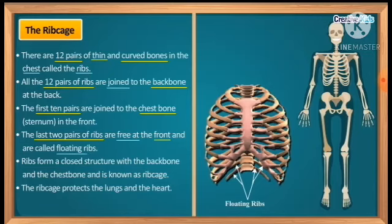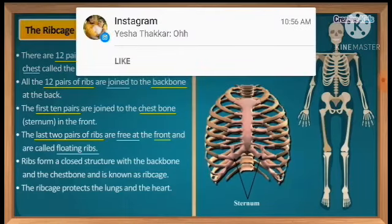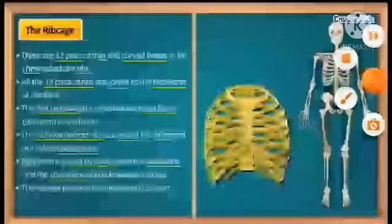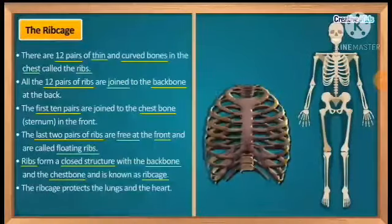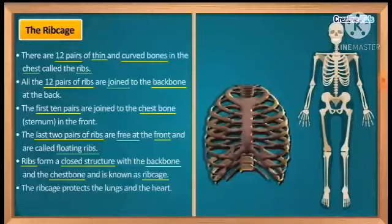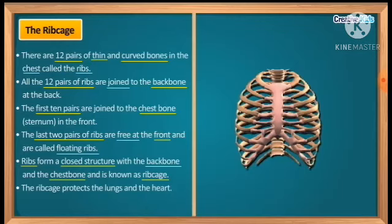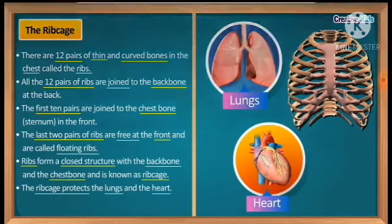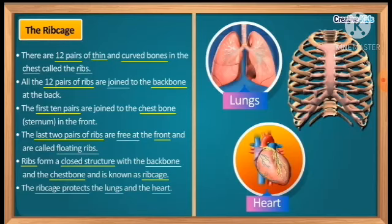The ribs form a closed structure with the backbone and chest bone, which is known as the rib cage. The rib cage protects the lungs and heart. These sensitive organs are present in the central area of the rib cage. So the backbone protects the spinal cord, and the rib cage protects the internal delicate organs like lungs and heart.